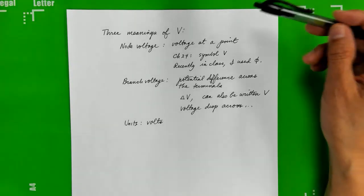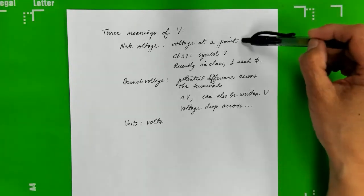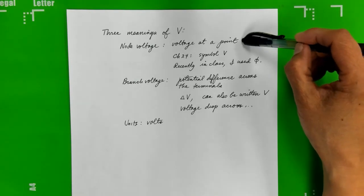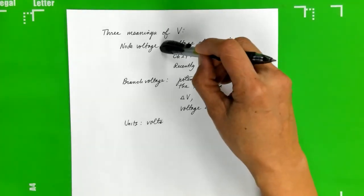So one meaning of V is that you're talking about the voltage at a particular point in space, or at a particular point along a wire. And in the engineering literature, they call that the node voltage.